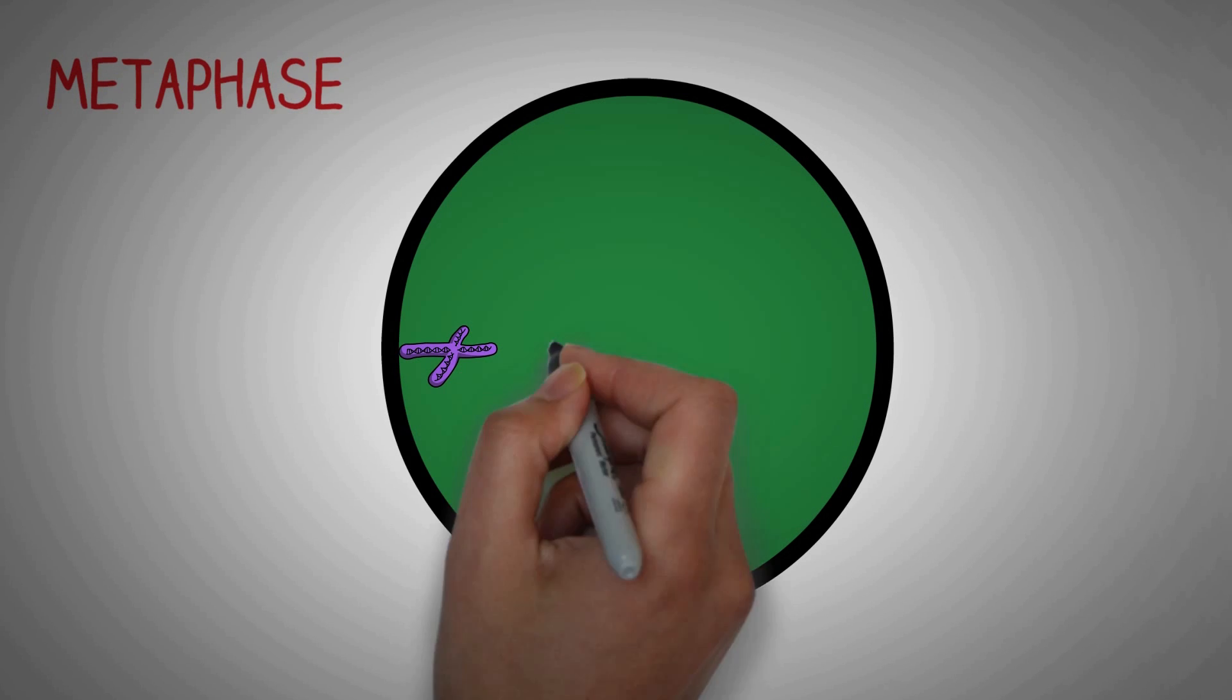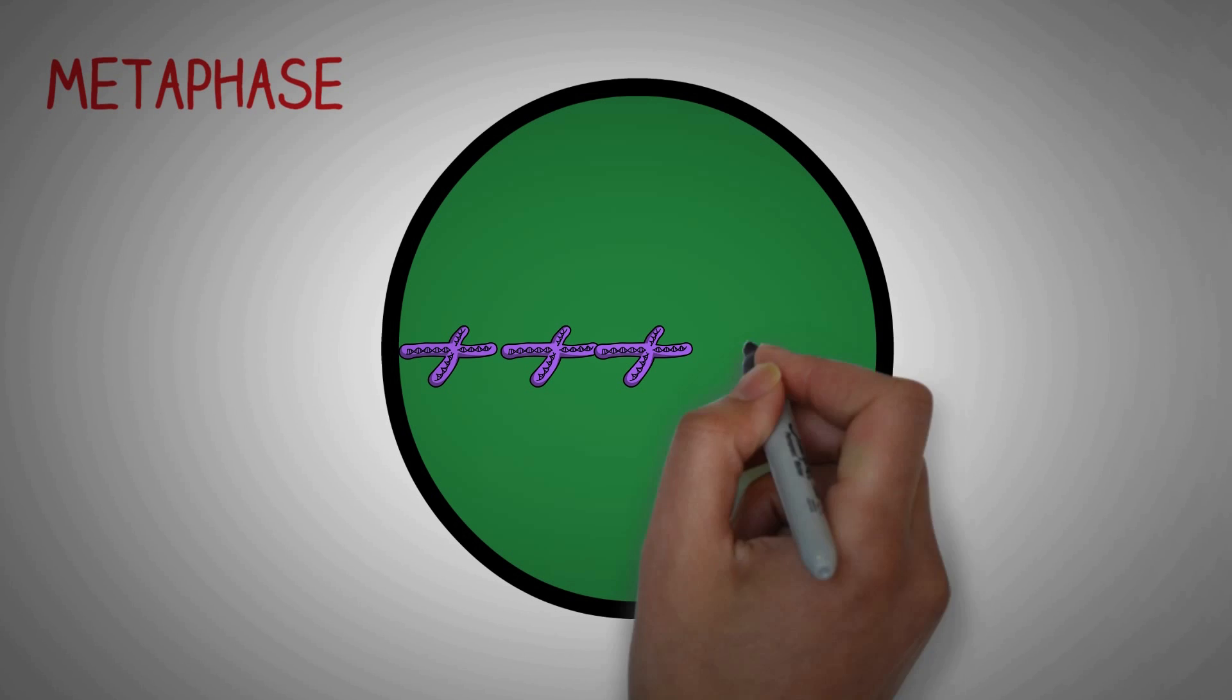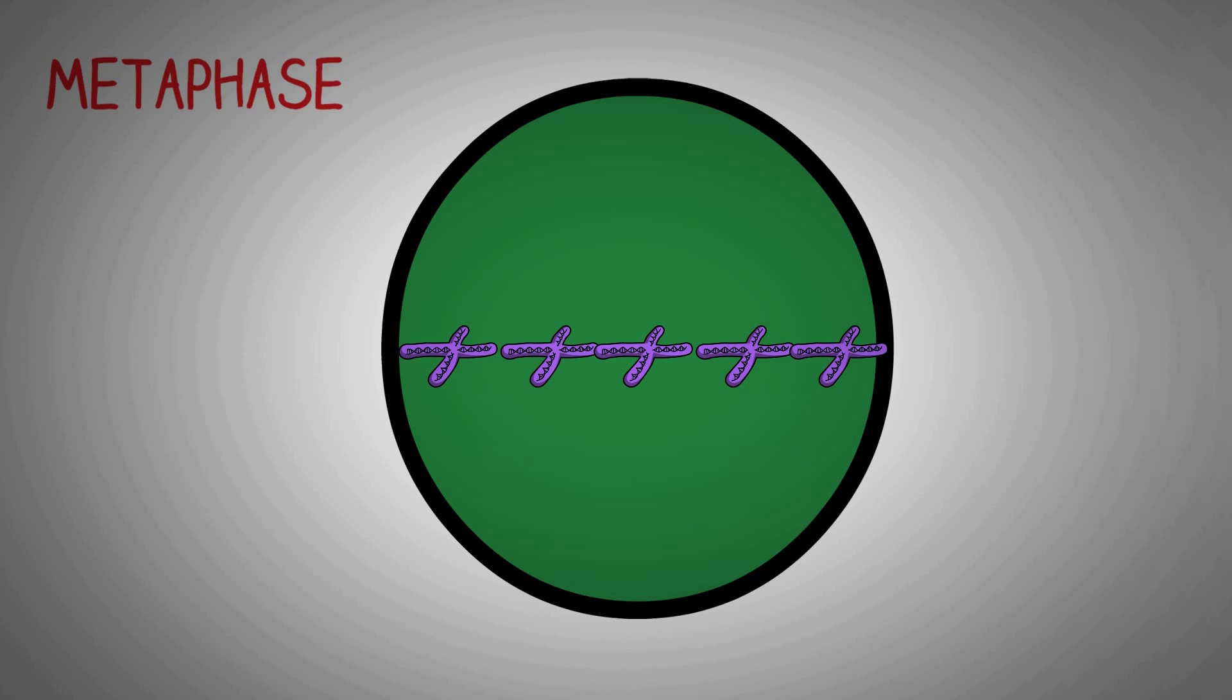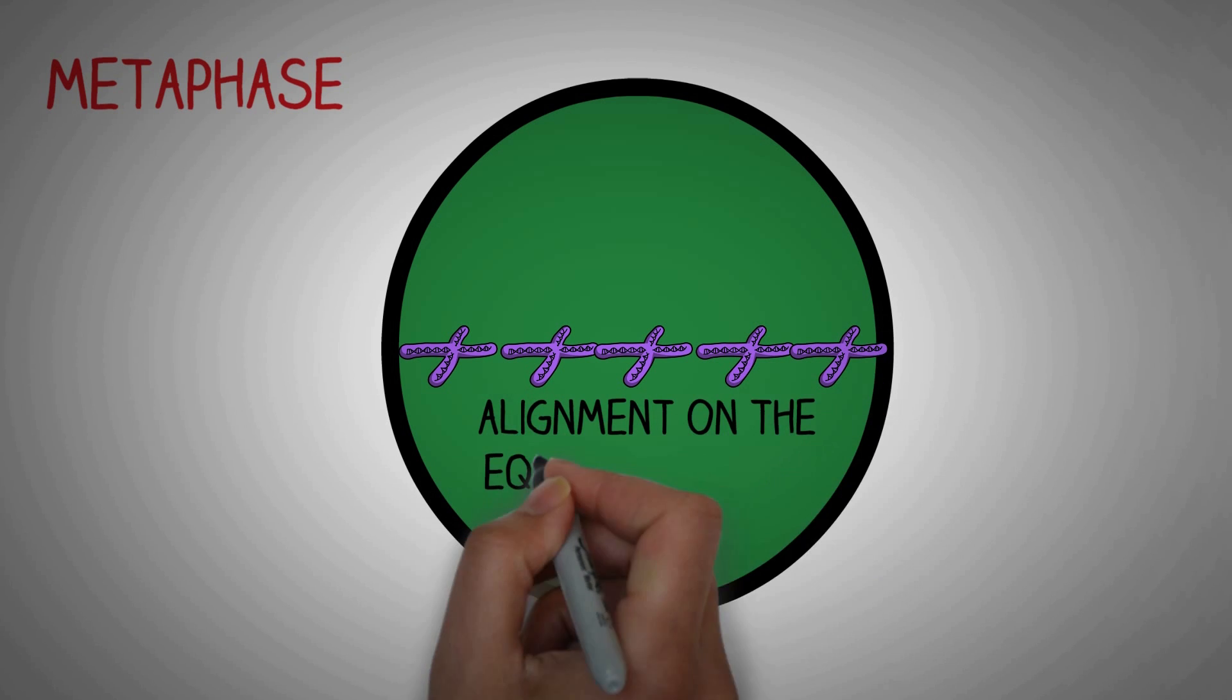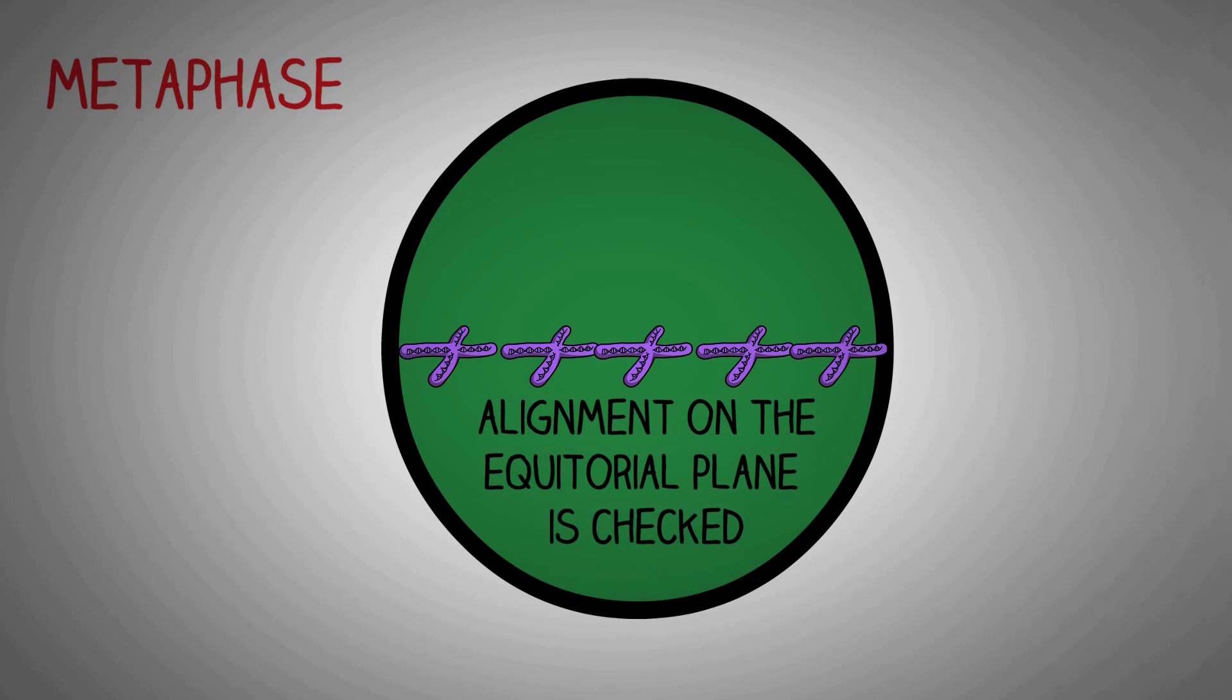There is one more important checkpoint that takes place in the metaphase of the M phase. Here it is checked whether the chromosomes are arranged on the equatorial plate properly or not. If they are arranged properly the cell signals to enter into the anaphase during which the chromosomes are pulled apart. This is done to ensure that both the new cells get equal and exact copy of the genetic material.